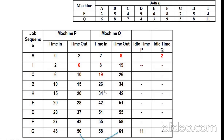For task B, in-time for machine Q is 26 — comparing 15 (out-time of machine P for task B) and 26 (out-time of task C on machine Q), 26 is the maximum. Adding the working time of task B on machine Q (8 hours): 26 plus 8 = 34. Continue this process for tasks H, F, D, E, and G to get the total elapsed time.